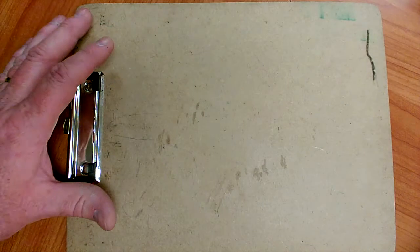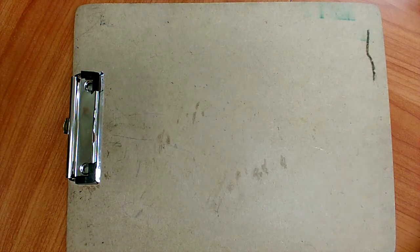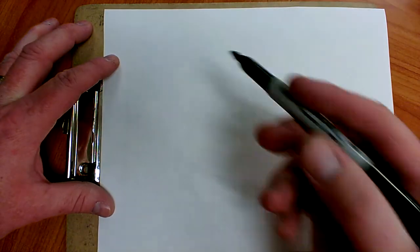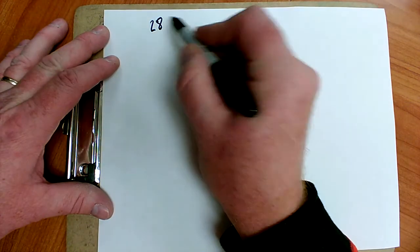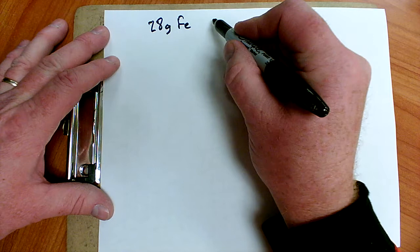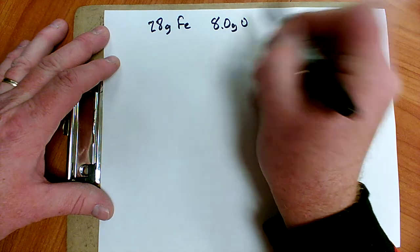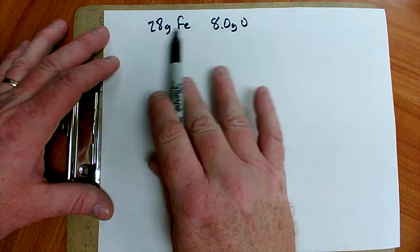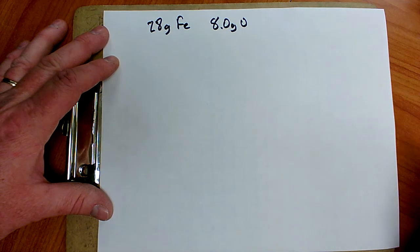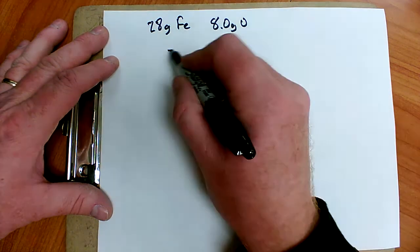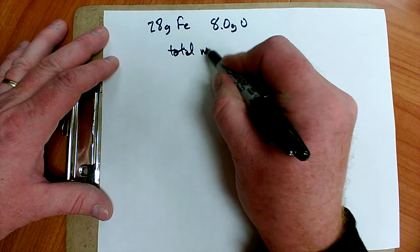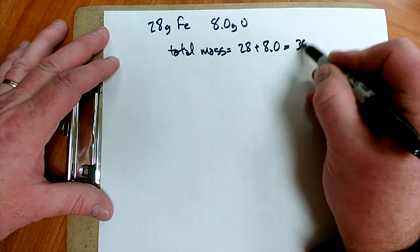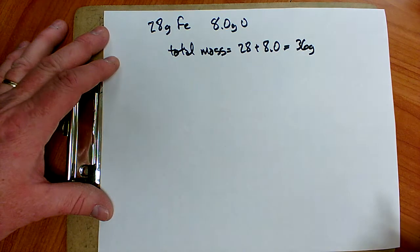Let's do another example. Suppose I have a sample that contains 28 grams of iron and 8.0 grams of oxygen, and I want to find the percent composition here. So I'm given the mass of each element within the sample. So the first thing I'm going to do is I'm going to find the total mass. That's pretty easy to do. It's just 28 plus 8.0 is 36 grams. So my total mass is 36 grams.